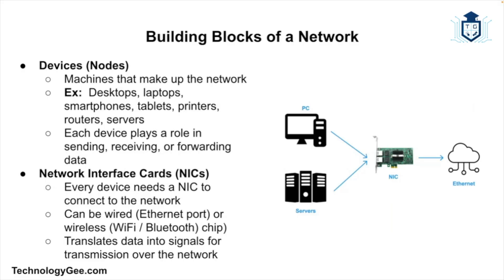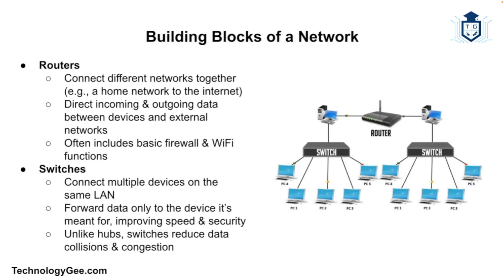Now let's talk about how networks are built. Every network needs a few key components. First, you have devices, also known as nodes — the actual gadgets and machines on the network, such as computers, phones, printers, routers, and servers. Each device also needs a NIC, or Network Interface Card, which could be a physical Ethernet port or a wireless chip — that's how you connect to the network. Then you have a router, which connects multiple devices to the internet and directs traffic between different networks.